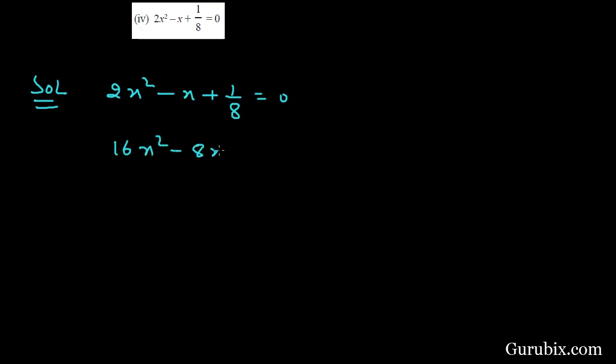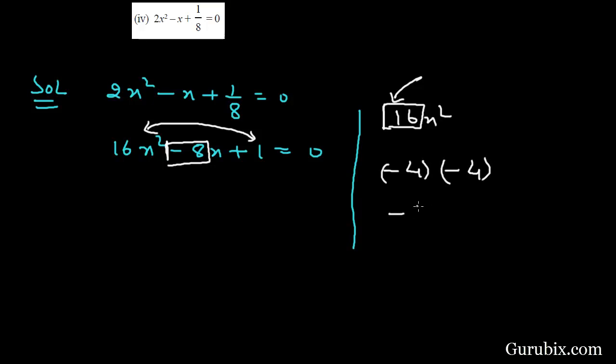Now we shall multiply first and last terms, then we have 16x². We shall split this 16 into two parts in such a way that the sum of those factors equals -8 but the product equals 16. So we have -4 and -4, since -4 × -4 is positive 16, and -4 + -4 is -8.